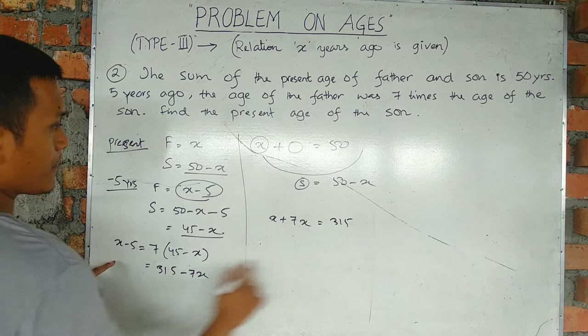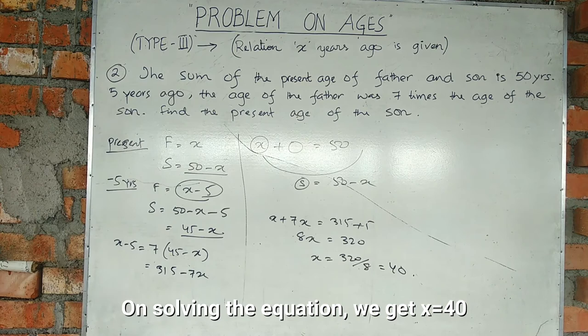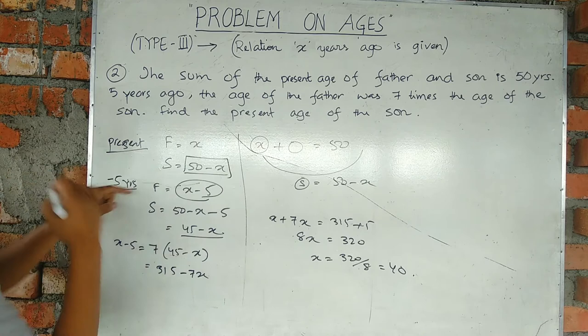x equals 320 divided by 8. 8 times 40 equals 320, so x equals 40. Now let's find the present age of the son. The present age of the son is 50 minus x, which is 50 minus 40 equals 10 years.